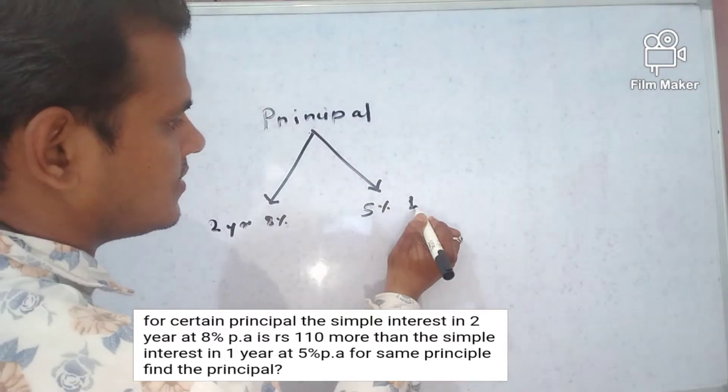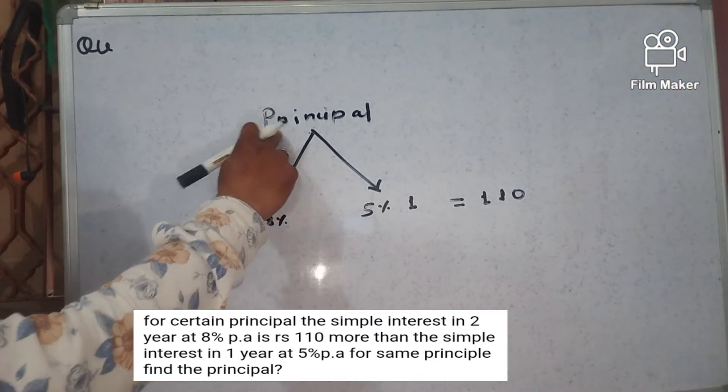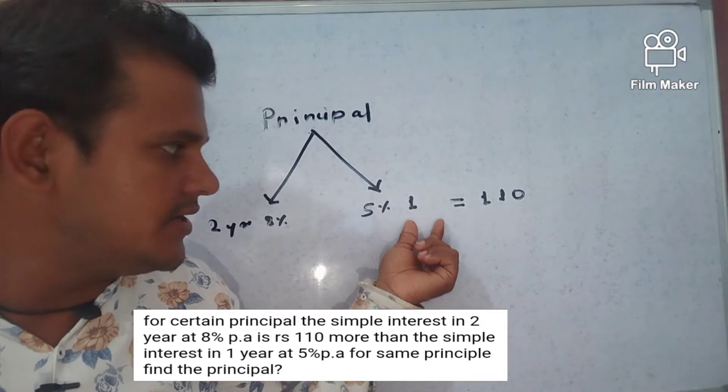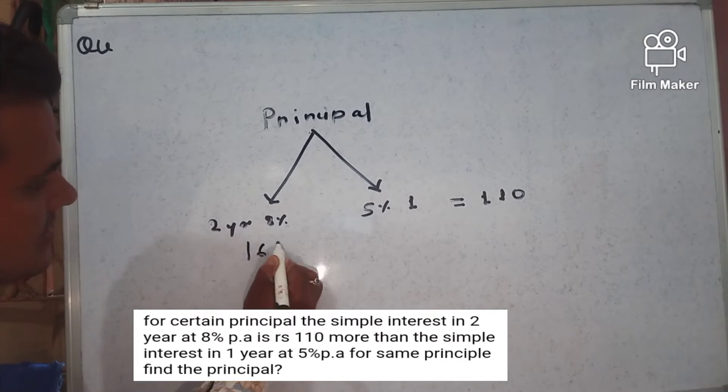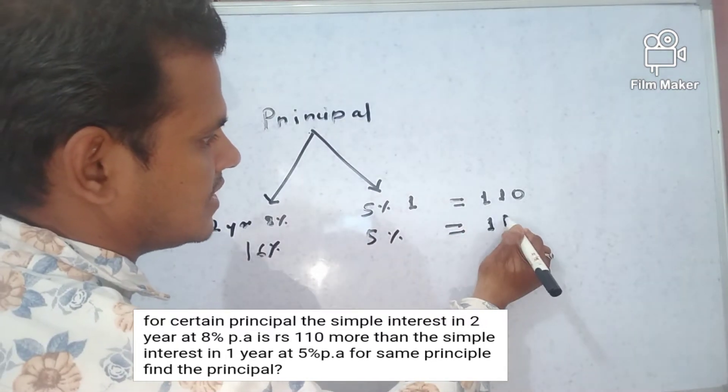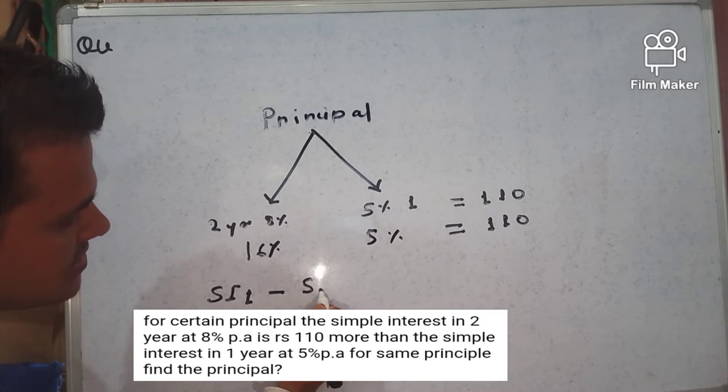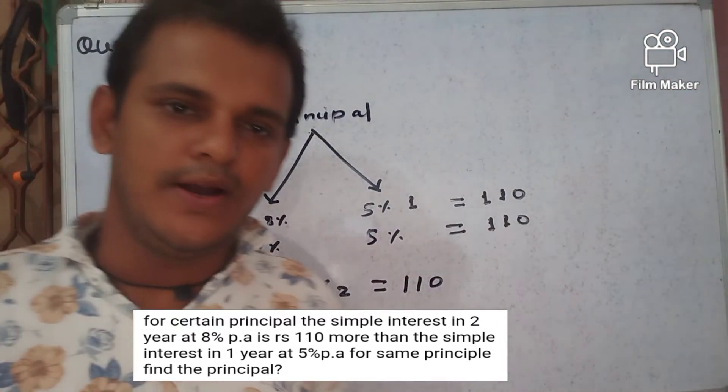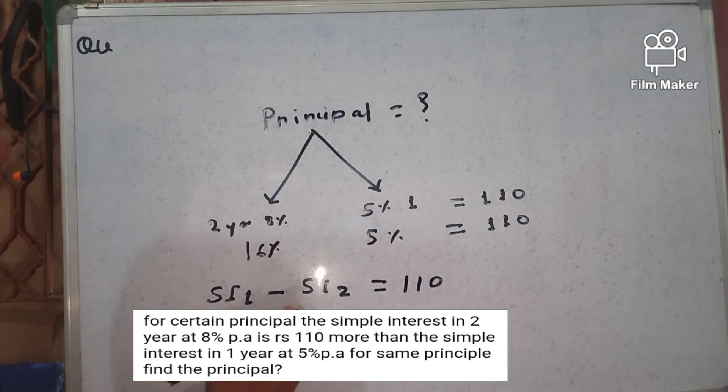More than 110, because this principal comes in two years at eight percent and this principal comes at five percent in one year, comes 110 more. Eight into two will be sixteen percent and five into one is five percent. Simple interest comes 110. So the simple interest formula is SI1 difference SI2 is equal to 110. Our target is what is the principal.